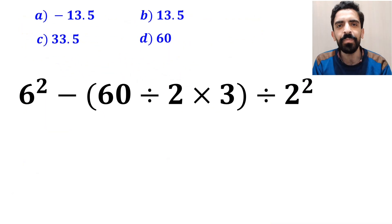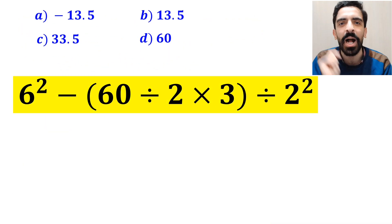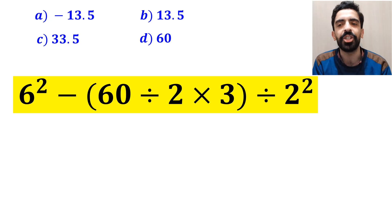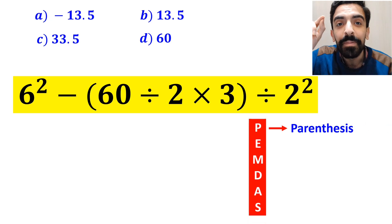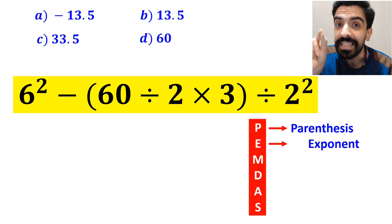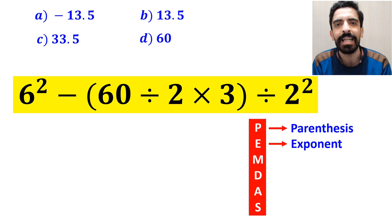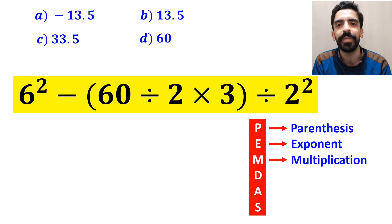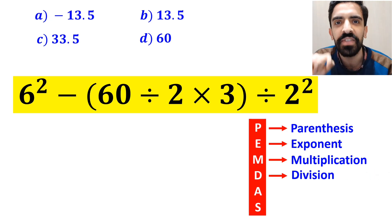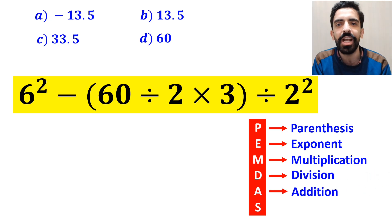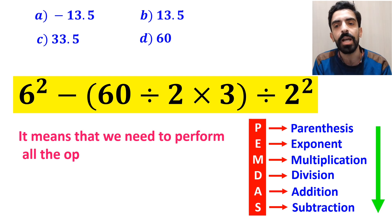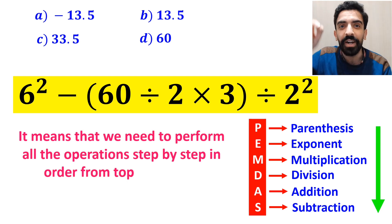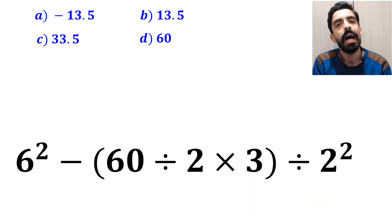Now let me show you how to solve this expression properly. To solve this question, we must follow a rule called PANDAS. In this rule, P stands for parenthesis, E stands for exponent, M stands for multiplication, D stands for division, A stands for addition, and S stands for subtraction. It means we need to perform all the operations step by step in order from top to bottom.